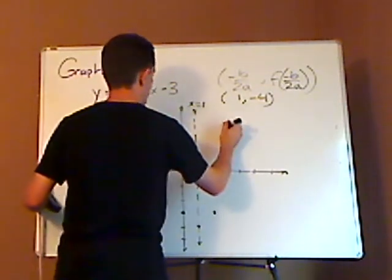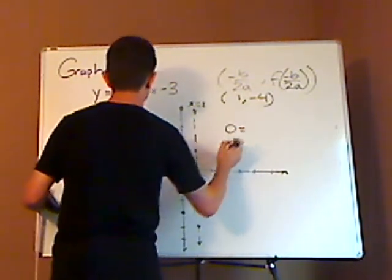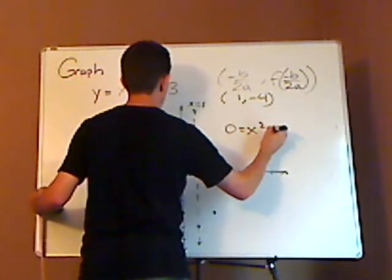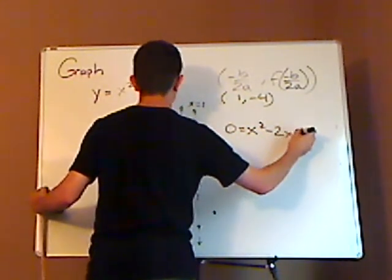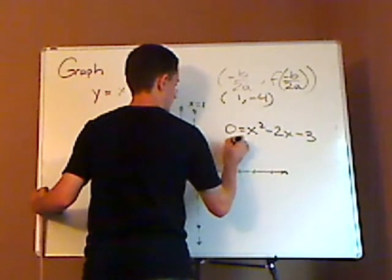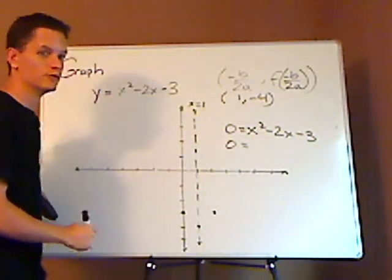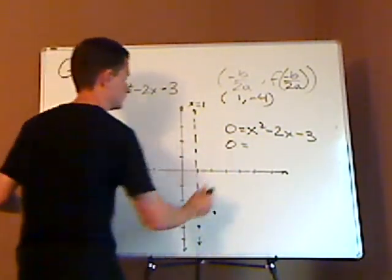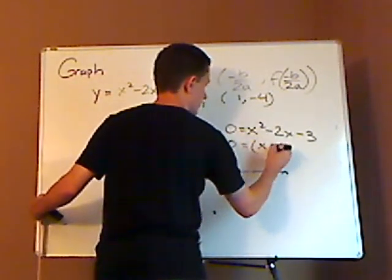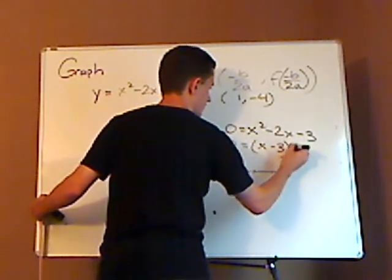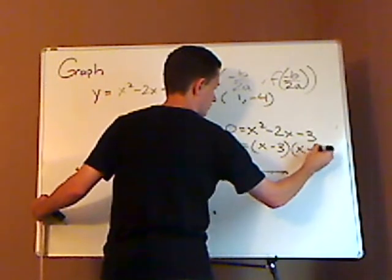And so you set this equal to 0. So that would be 0 equals x squared minus 2x minus 3. And this is actually something that's factorable, which makes it even easier. So that would be x minus 3 times x plus 1.